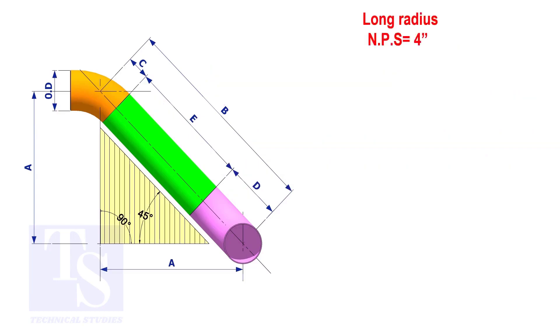Assume that the elbows are long radius. Calculate the true length of the pipe.